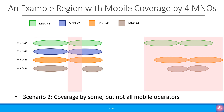The second scenario is where there is coverage by some but not all mobile operators. Here, mobiles whose network has coverage will be able to connect and use the services normally. The mobiles whose network has no coverage will not be able to connect. However, they will still be able to make emergency calls to emergency services as needed.